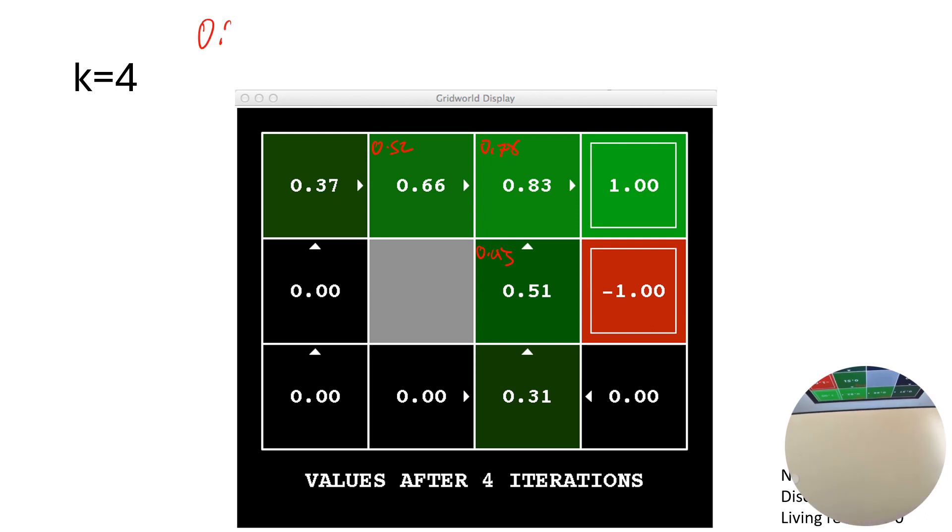So 0.9, 80% chance we go this way, 10% chance we stay exactly where we are, and 10% chance we go down. And we calculate that out, which gives us roughly 0.83.